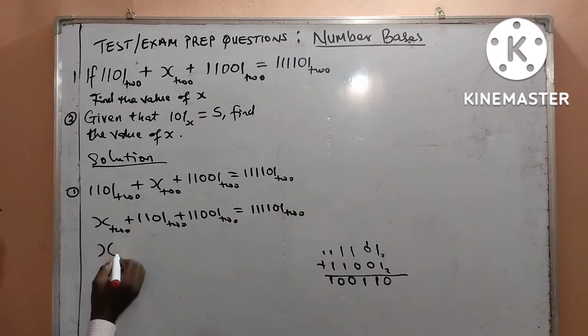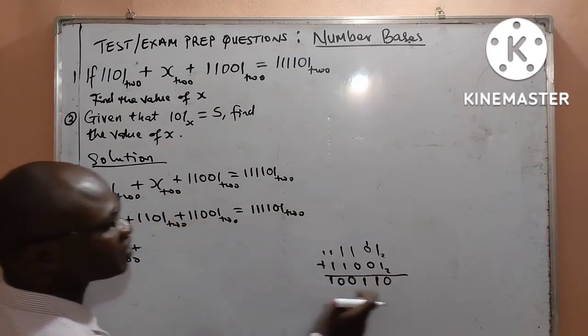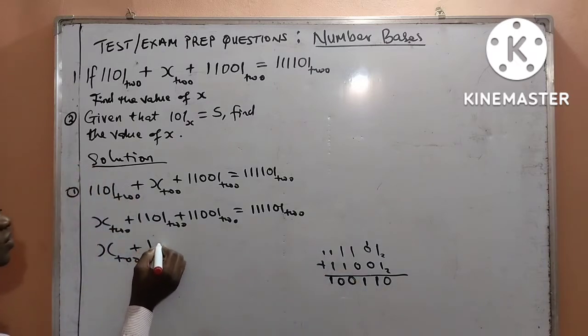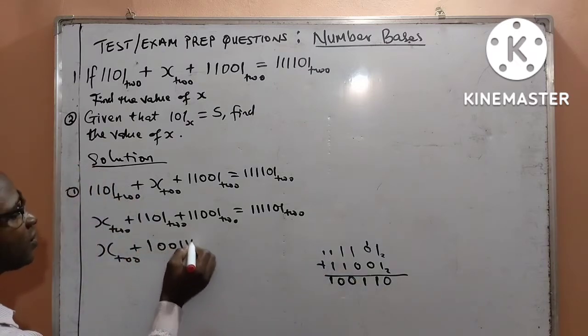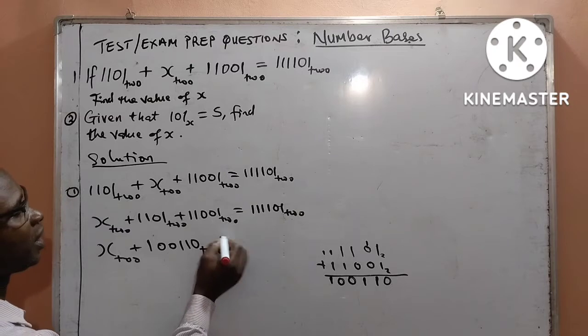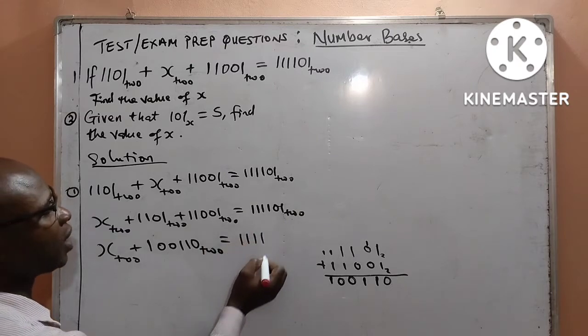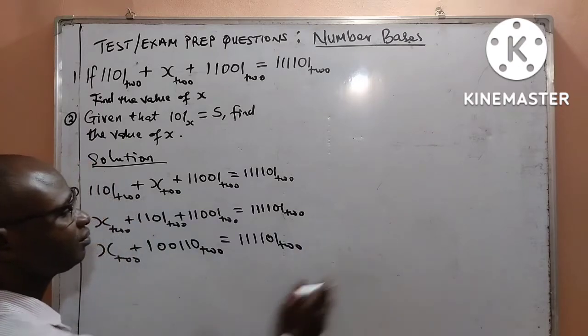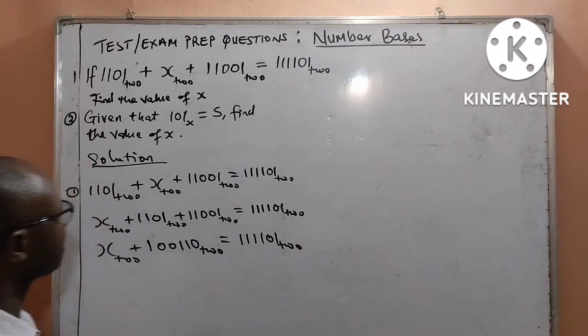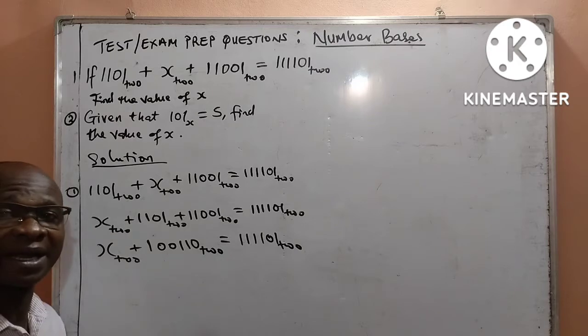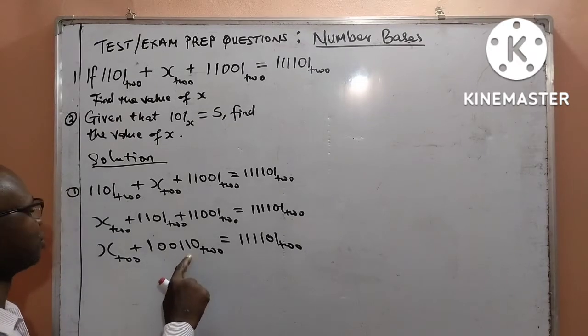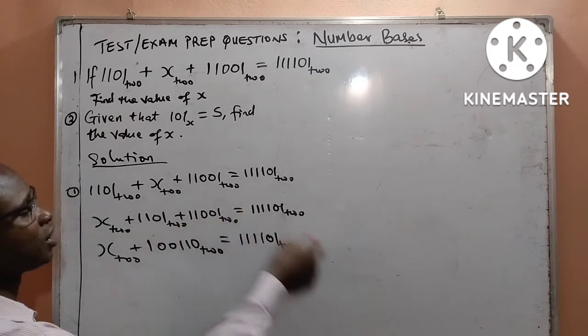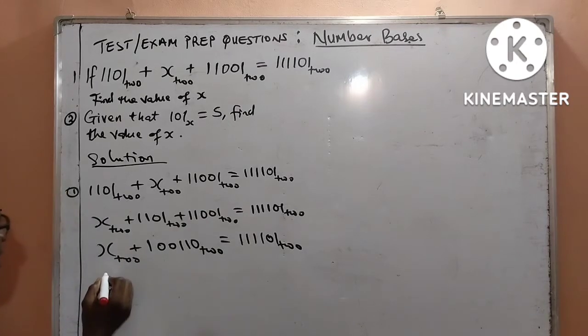Therefore, we can now say that x base 2 plus the addition of these two now resulted to 100110 base 2. Equal to 111101 base 2. So, this is what we have now. Next step I will take is to move what I have here by the left, that is in base 2 and alone, to the right-hand side. And that will look like this.